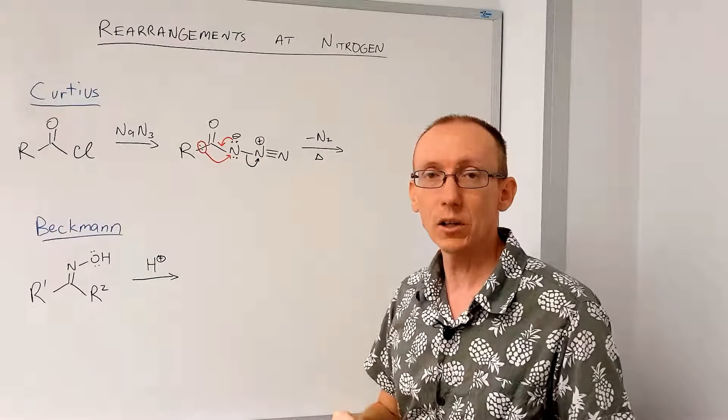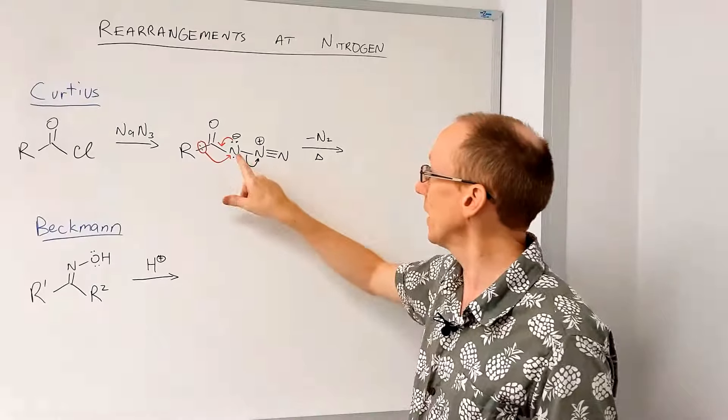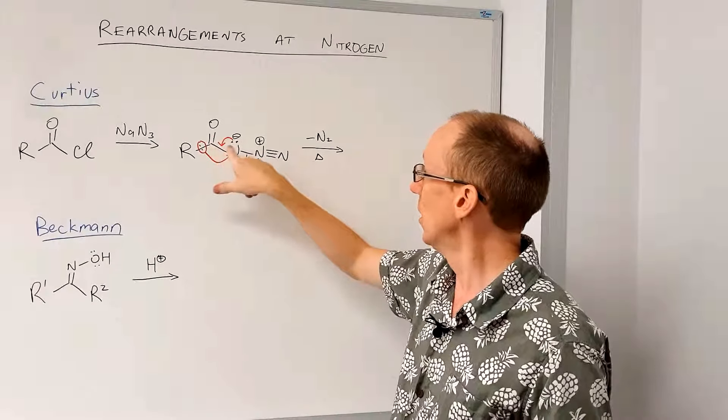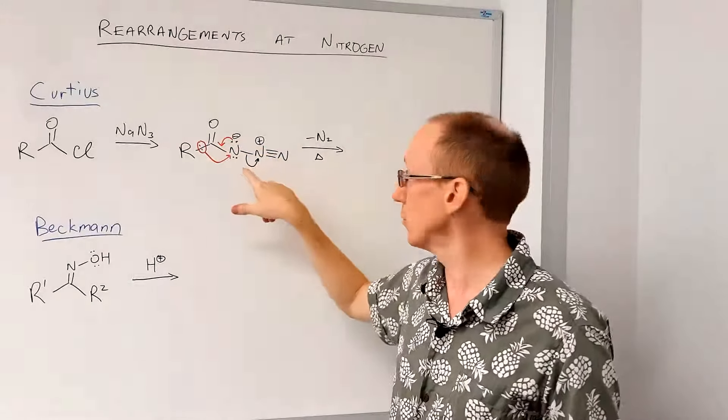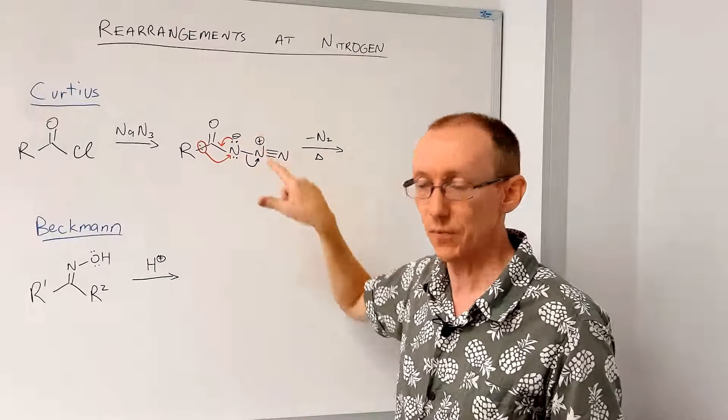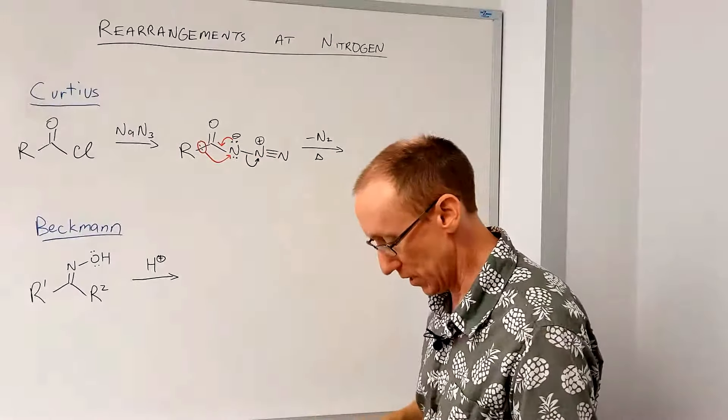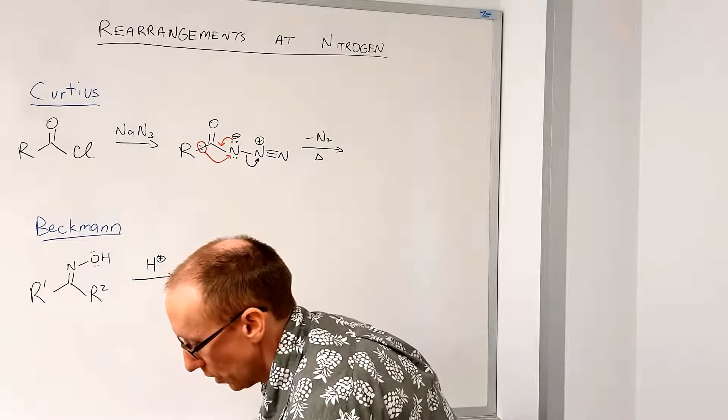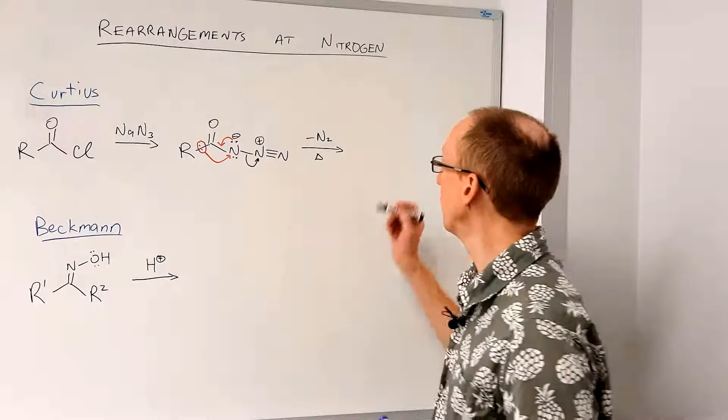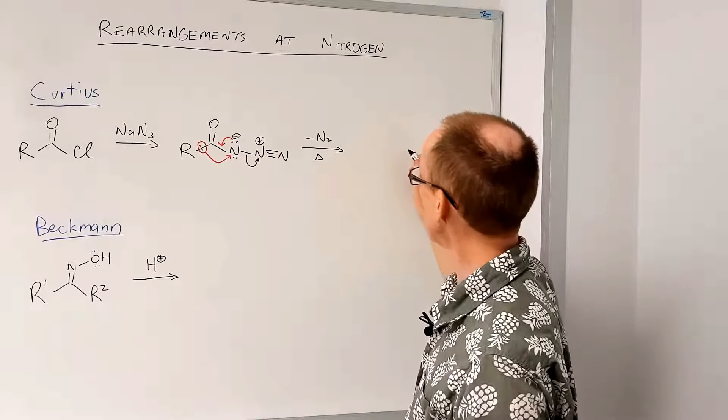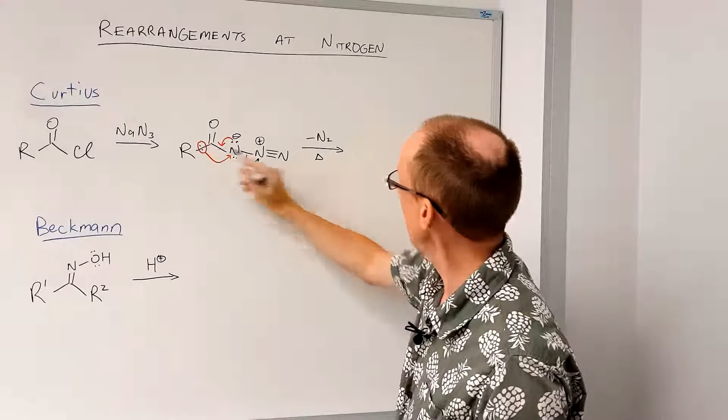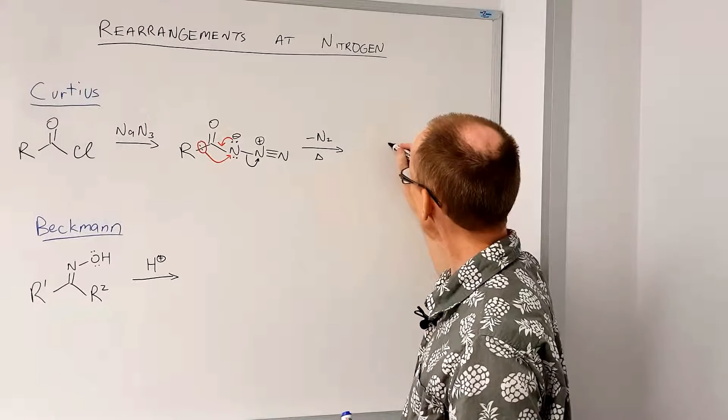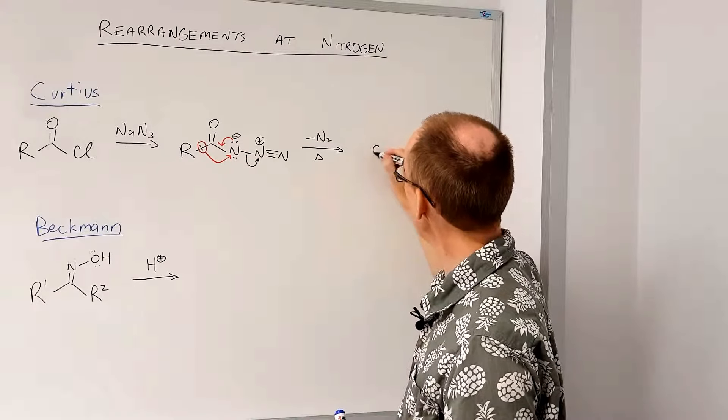Now this might look a bit like curly arrow spaghetti, but it does all make sense. So we're always following TET rules and we've got nice balanced structures. And what we end up with is something that looks quite good from a bonding point of view. So that R group is now going to be attached to this nitrogen. That carbon atom there,